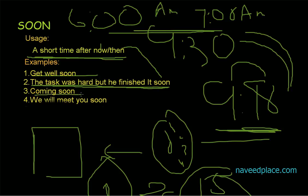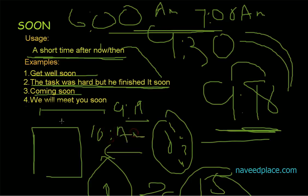Then we have 'coming soon' — it is very common. For example, 'I am coming soon.' Then we have 'We will meet you soon.' So here we are saying that right now we are not meeting, but after some short time — for example, right now it is 9:19, and we will meet at 10 a.m. So when we say a short time after now and then, we use SOON.